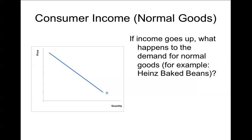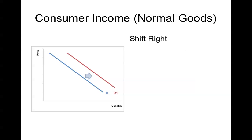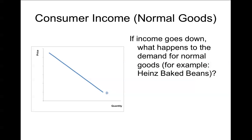The first determinant is consumer income with normal goods. If income goes up, at any given price you're able to afford more of those goods you want — so the demand curve shifts right. If income goes down, you can no longer afford as many of the things you wanted, so at any given price you have lower quantity demanded, and the demand curve shifts left.